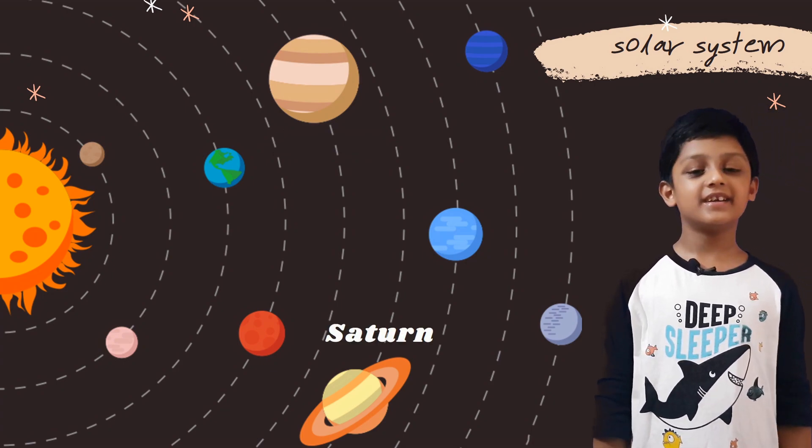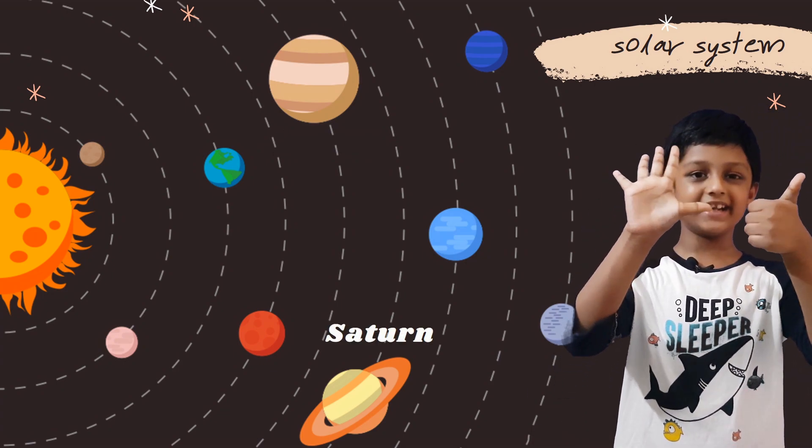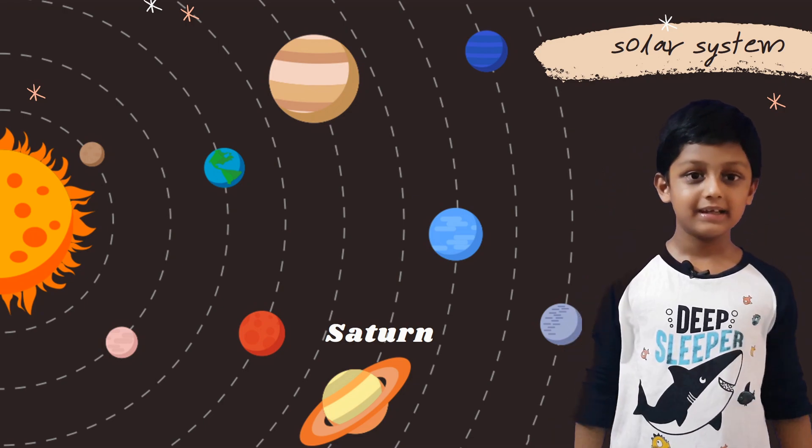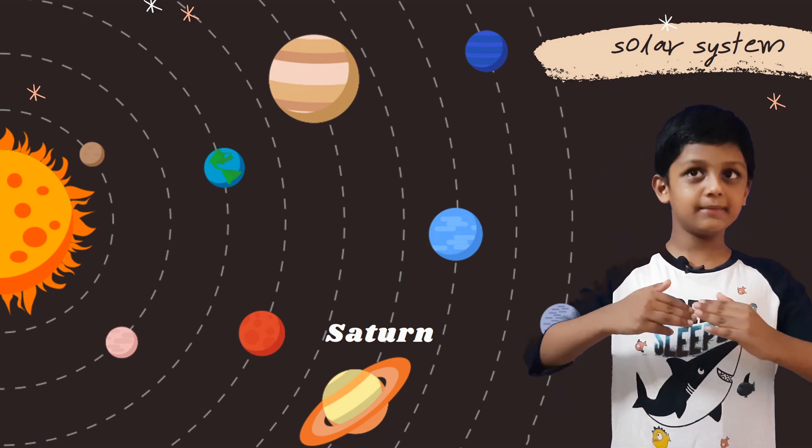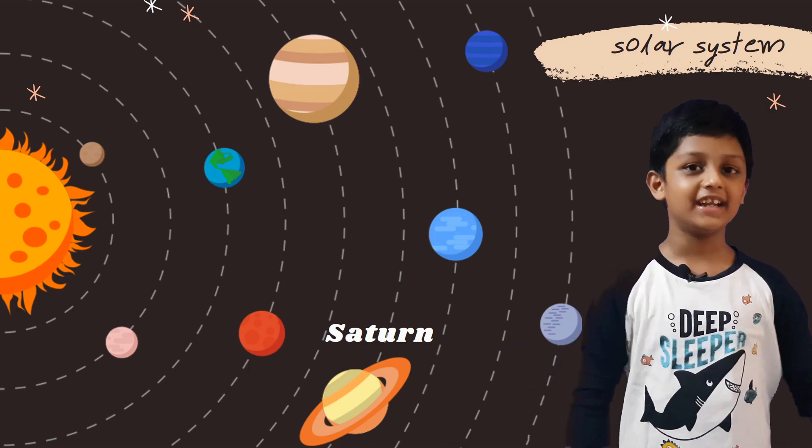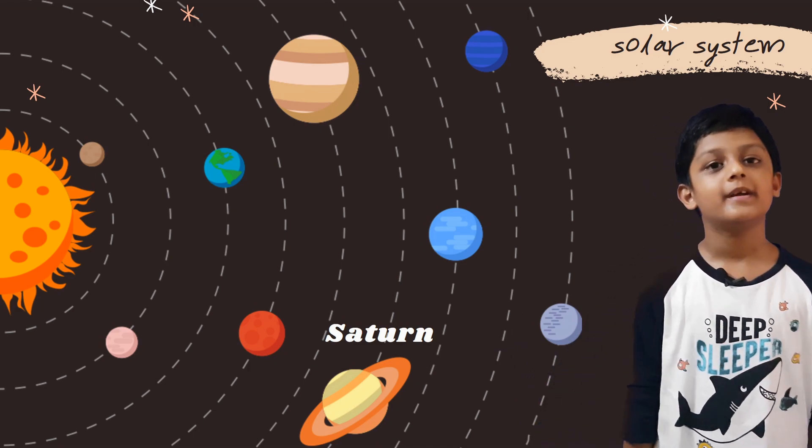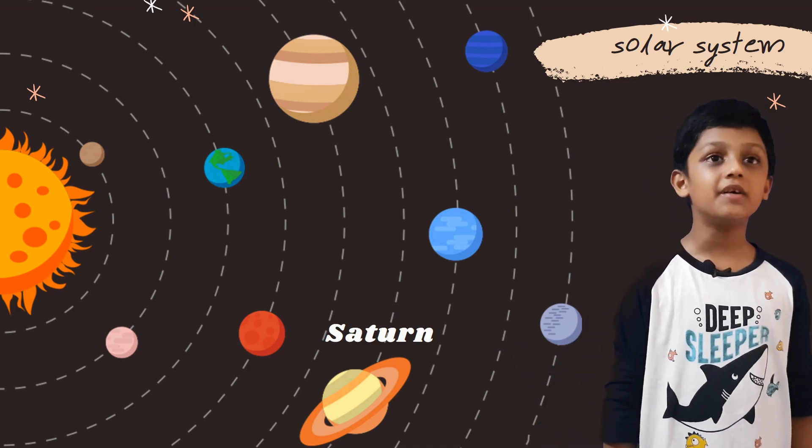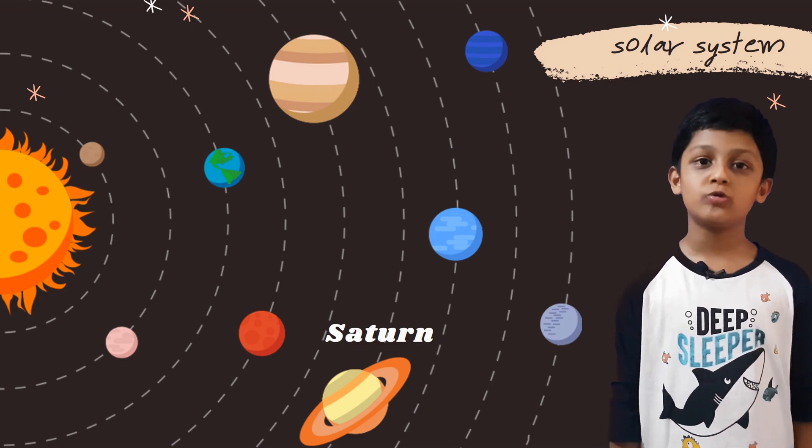Saturn, it is the sixth planet from the sun. It has many beautiful rings around it. And the rings are made out of ice, snow and dust.